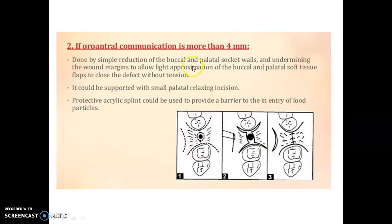If oroantral communication is more than 4 mm, by simple reduction of the buccal and palatal socket wall and undermining the wound margin, you can allow light approximation of the soft tissue on both sides for proper closure without tension. Sometimes a small palatal relaxing incision is needed. A protective acrylic splint can be placed to provide a barrier to food entry into the communication.